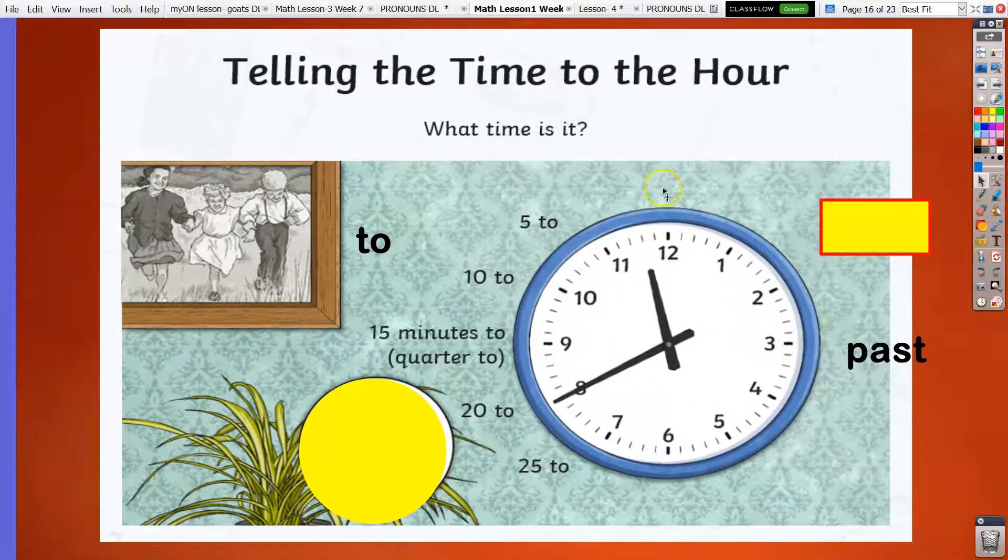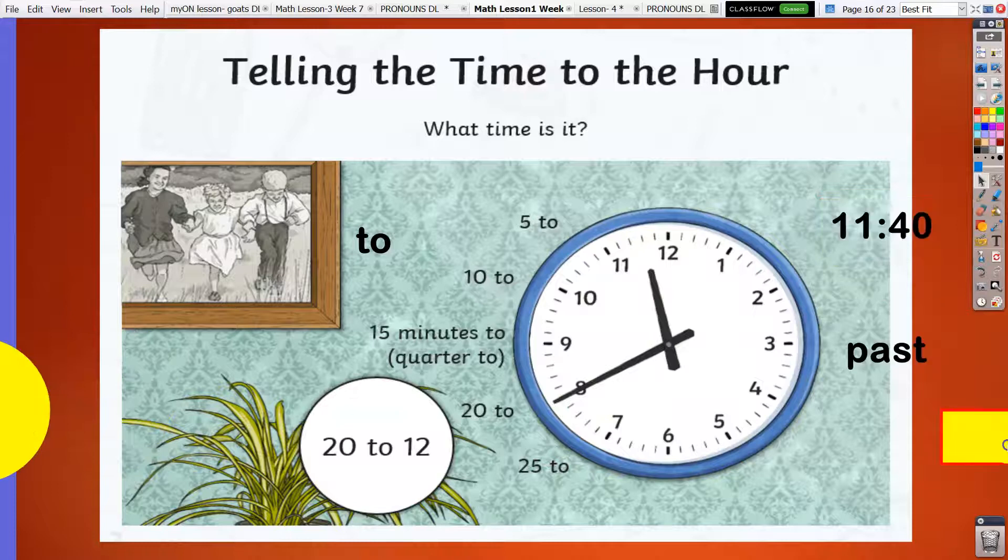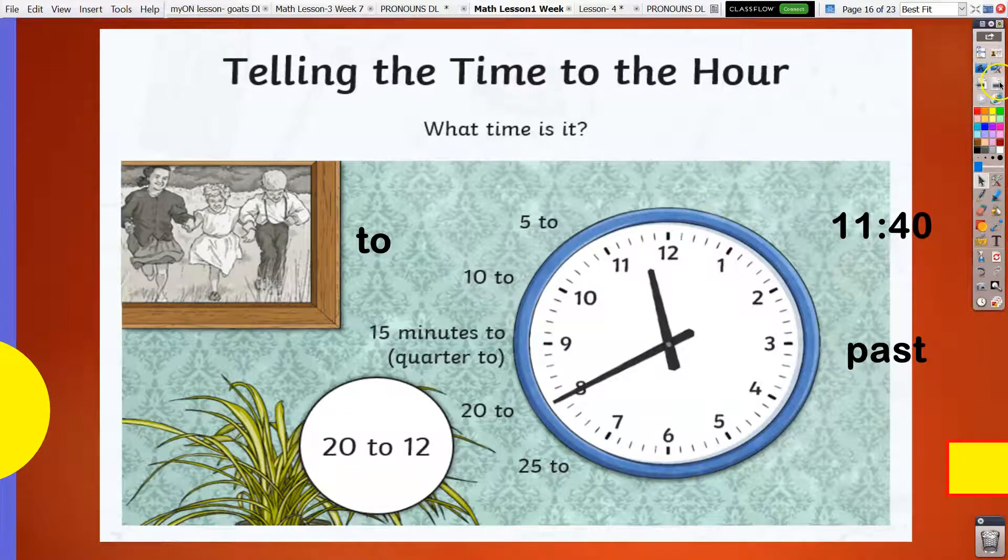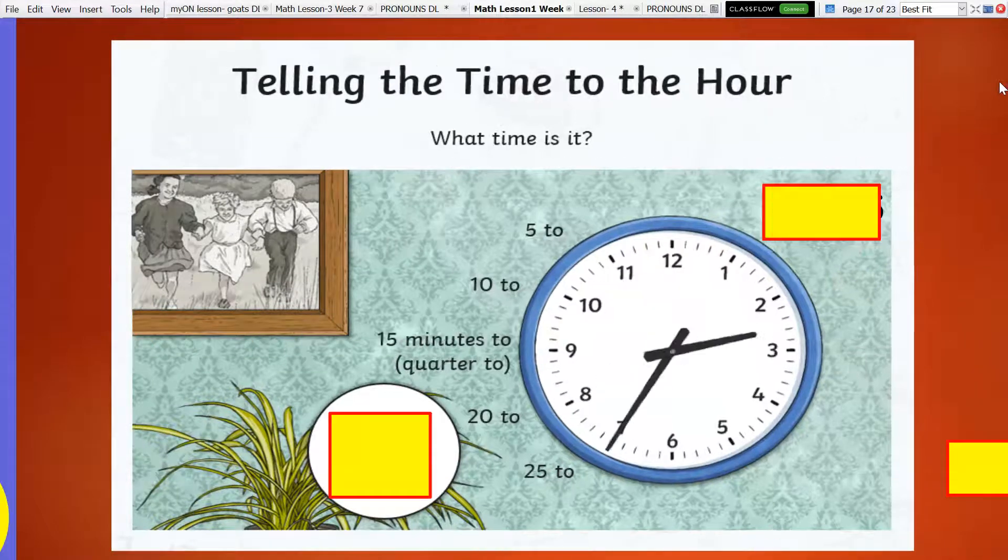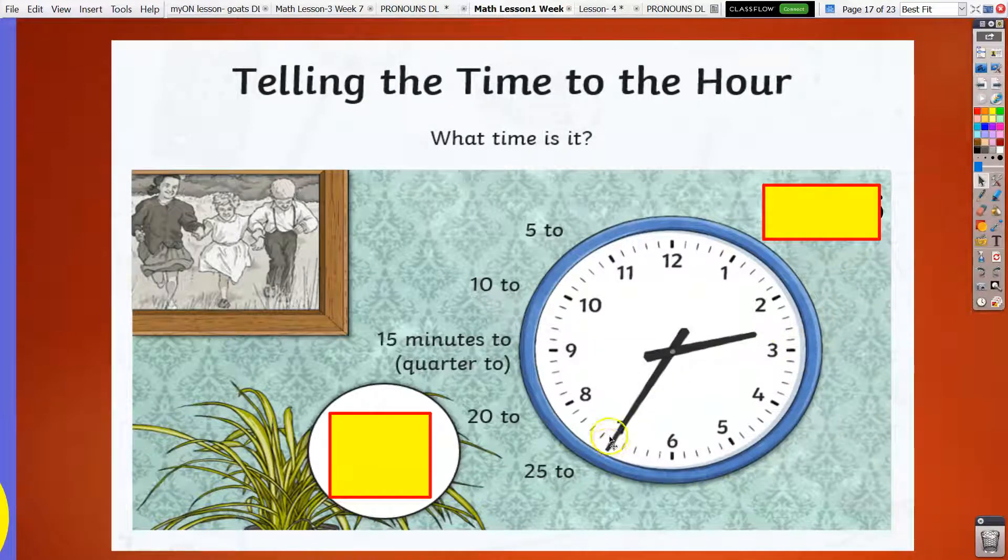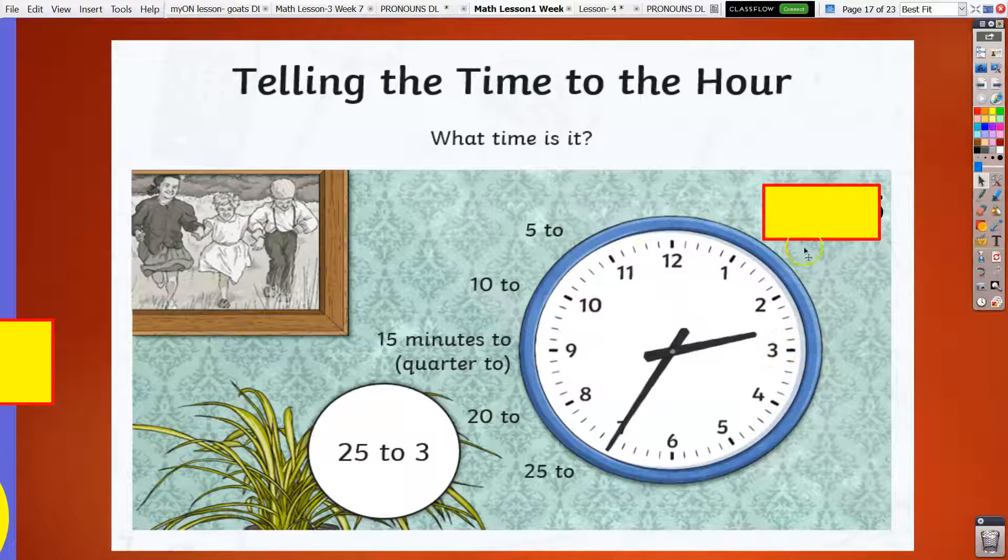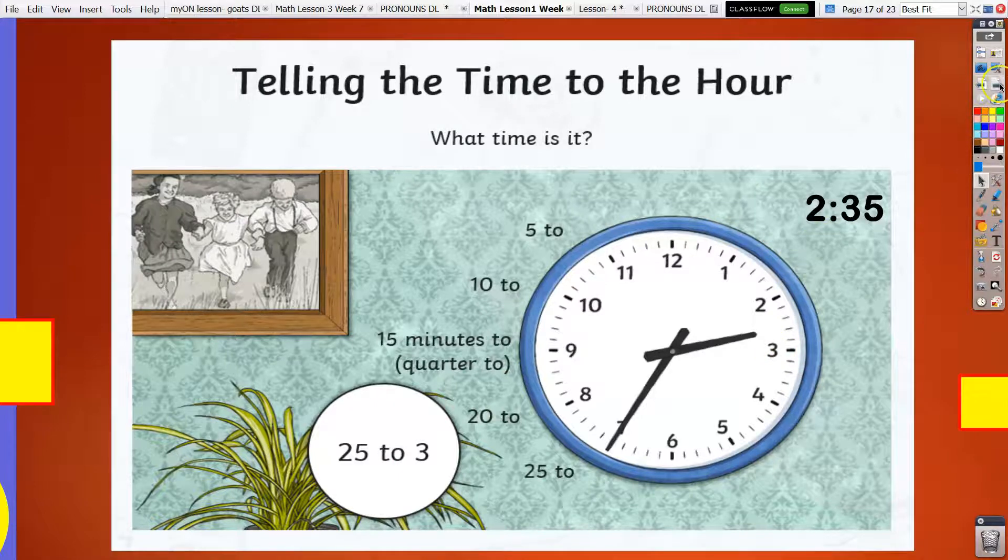What time is it? It's 22. The next hour is 12, so 20 to 12, or 11:40. What time is it? It's 25 to 3, 25 to 3, because that's the next hour. Or 2:35.